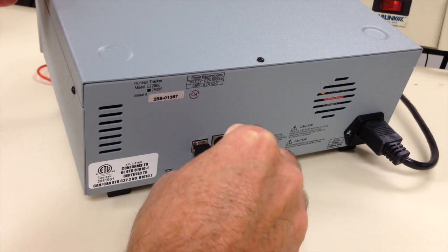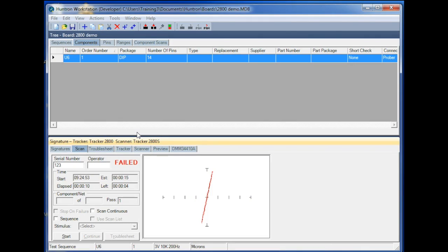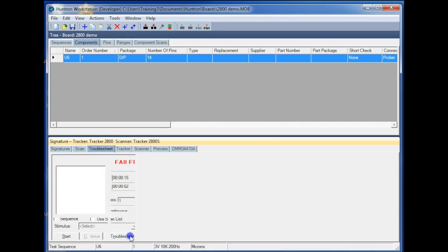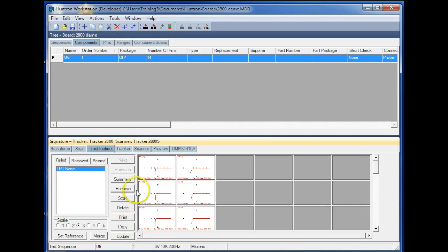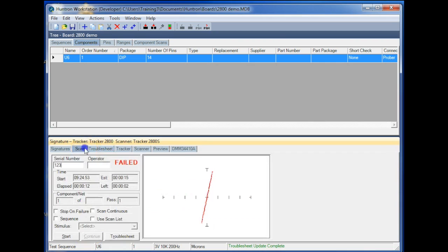Lastly, the ability for the tracker 2800 to be connected and controlled by the Huntron Workstation software gives it a unique potential that the tracker 2000 by itself never had. The ability to capture, store, and compare signatures on a PC enables users to create controlled tests.